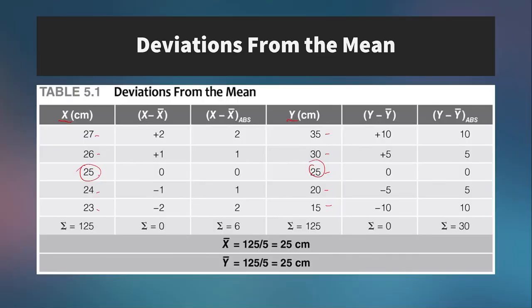So if we were just to take the deviation scores, we see that 27 has a deviation score of 2. 26 has a deviation score of 1. 25 has a deviation score of 0, because of course 25 is also the mean here. 24 has a deviation score of negative 1, because it's below the mean. And 23 has a deviation score of negative 2, because it's below the mean. And the sum of all those is 0.